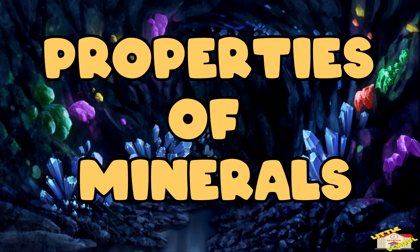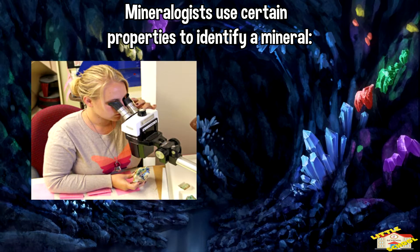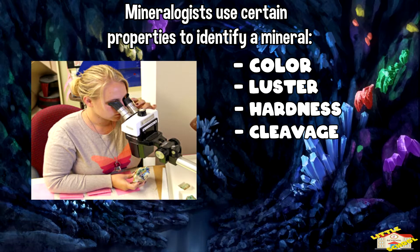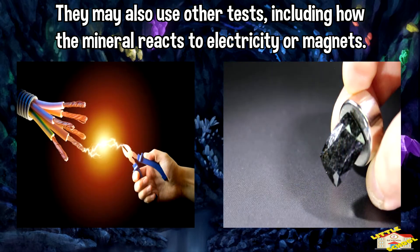Properties of minerals. Mineralogists use certain properties to identify a mineral: color, luster, hardness, cleavage, and streak. They may also use other tests, including how the mineral reacts to electricity or magnets.